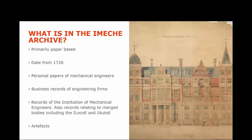So what is in the IMechE archive? Our collections are primarily paper-based. However, we are fortunate enough to have digitised a selection of our collection, which is available to be viewed online. Our collections date from 1726 and they include the personal papers of mechanical engineers, including letters, notebooks and blueprints; the collection records of engineering firms; records of the Institution of Mechanical Engineers, including council minutes and membership records; records relating to merged bodies including the Institution of Locomotive Engineers and the Institution of Automobile Engineers; and also artefacts such as models, artworks and personal items.